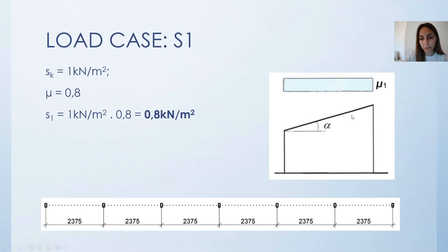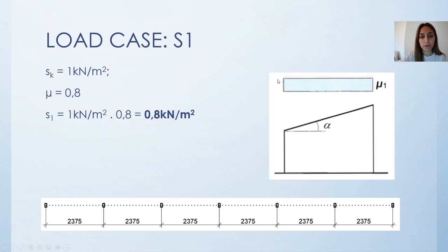In today's example we will work with a monopitched roof that has a slope of approximately 4 degrees, and the purlins are positioned at a distance of 2.375 meters. For this load case we have calculated a value of 0.8 kN per square meter and the shape of the load case will be a rectangular surface load.